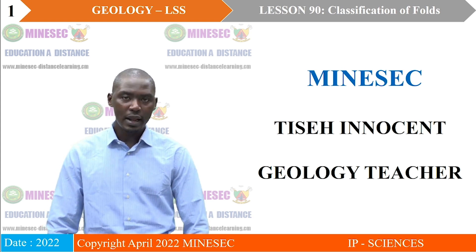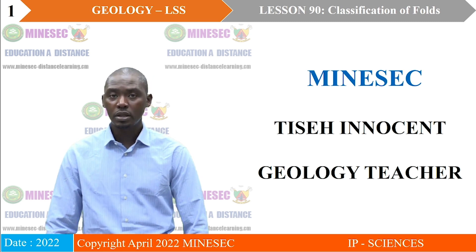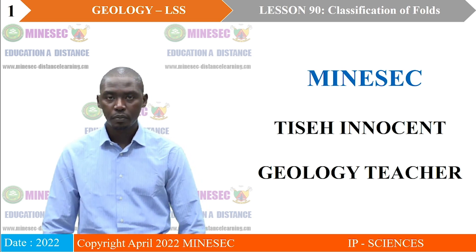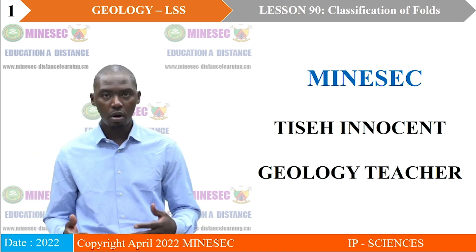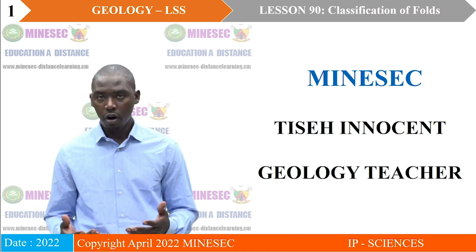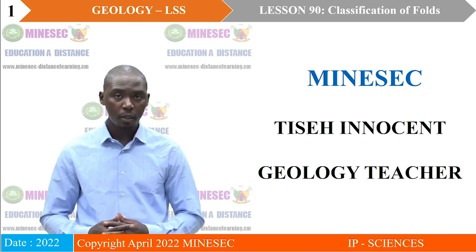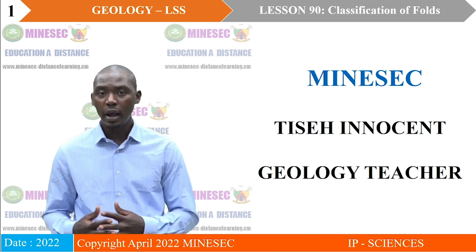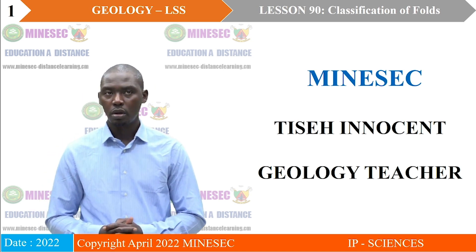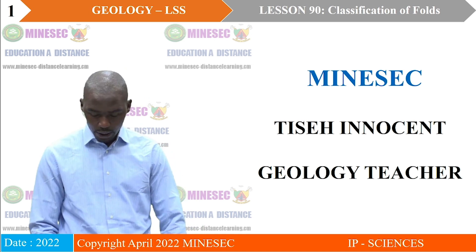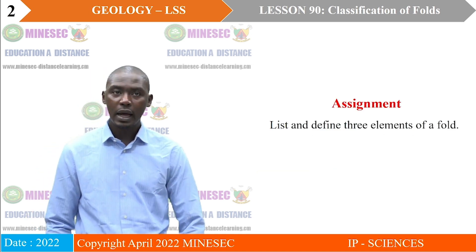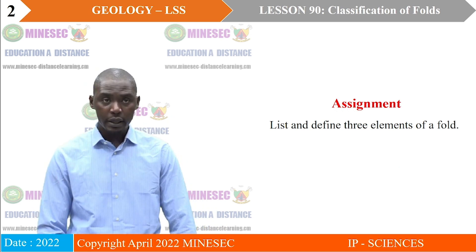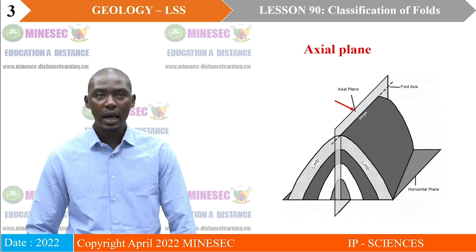Our previous lesson was on elements of fold, where we looked at the definition of fold as a flexion or a wrinkle formed in a rock or that affects pre-existing structures. We tried to look at the parts of a fold, or what we call elements of a fold. At the end of that lesson, we were asked to list and define three of those elements. We take the first element, which is the axial plane.